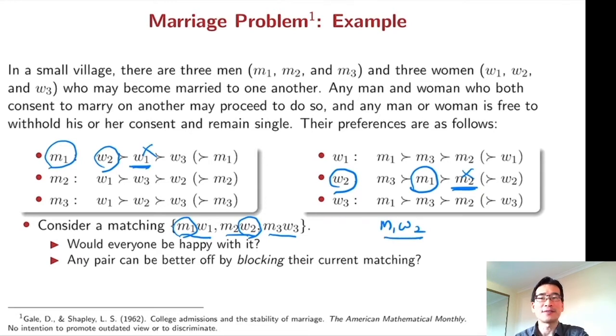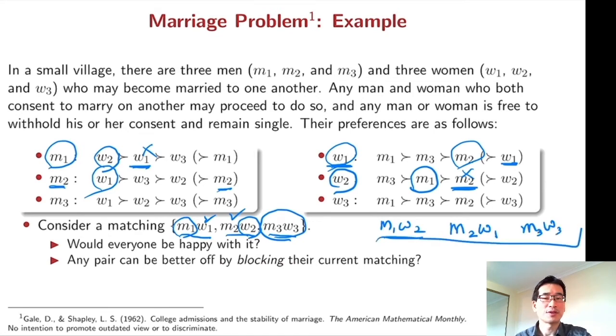What will happen if M1 and W2 are married? This makes W1 and M2 remain single. Then W1 and M2 find that getting married to each other is better than being single. So we have another pair M2 and W1 and as before M3, W3 remain unchanged. So we have a new matching.